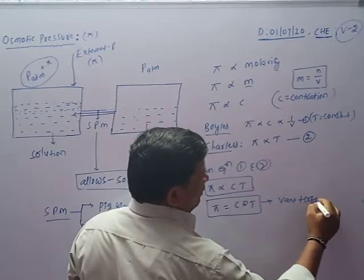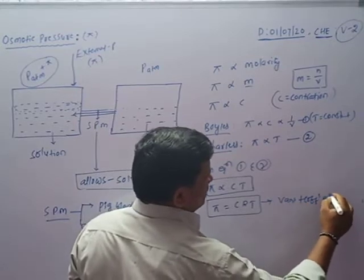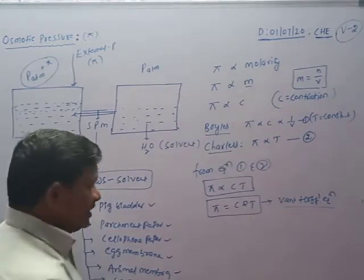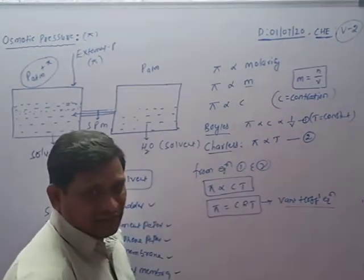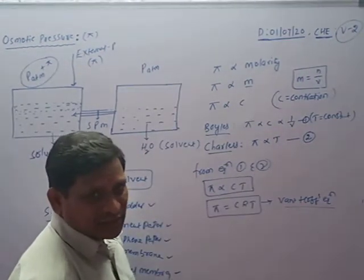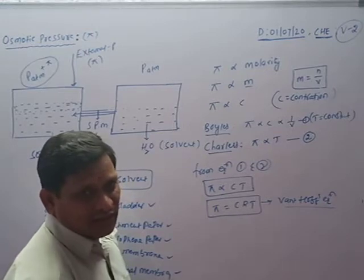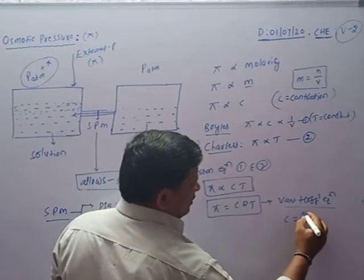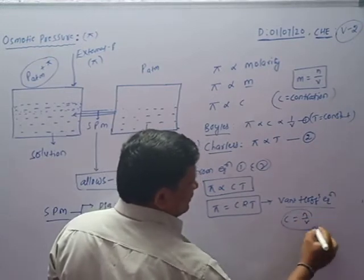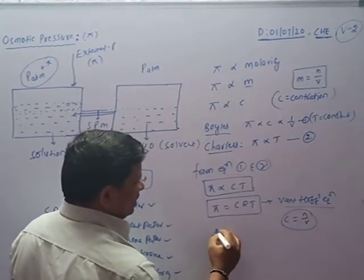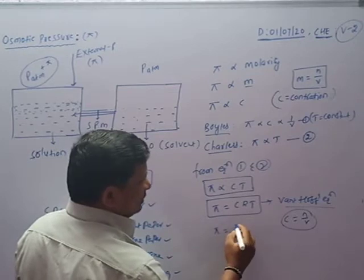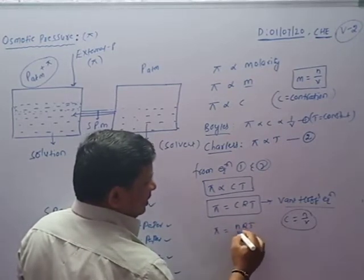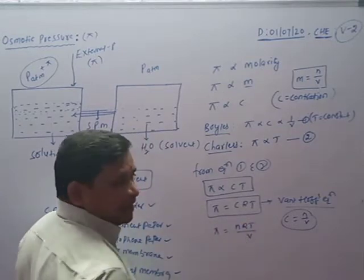This equation is the Van't Hoff equation. Now, what is C? C is concentration, which is measured with respect to molarity. Molarity means number of moles divided by volume. So C equals n by V. Substituting this into the Van't Hoff equation, pi equals nRT divided by V.